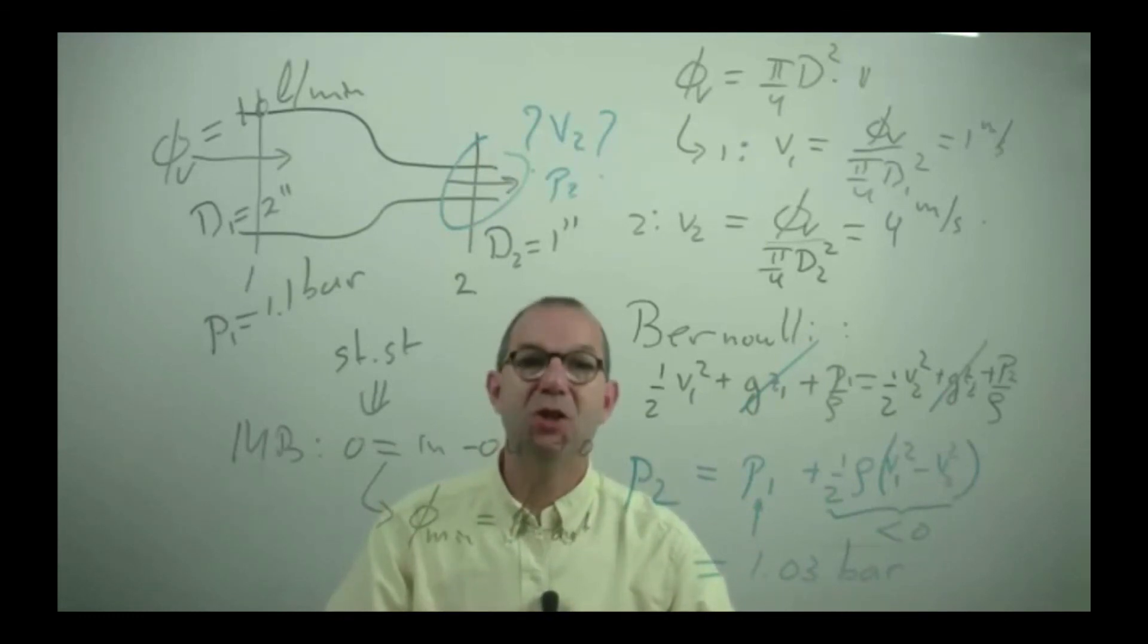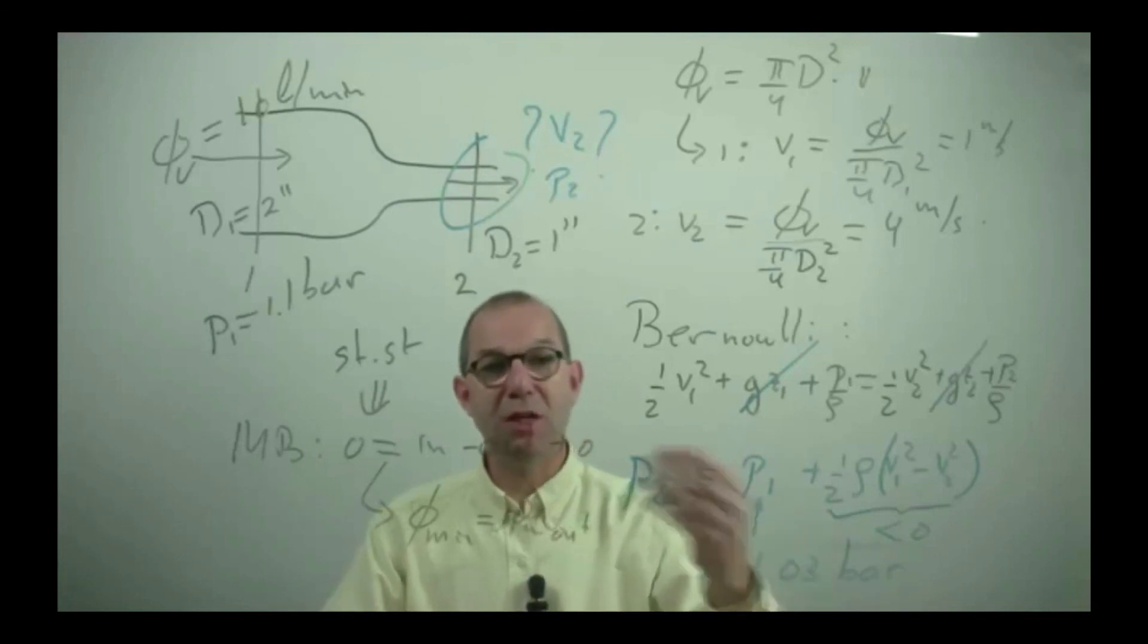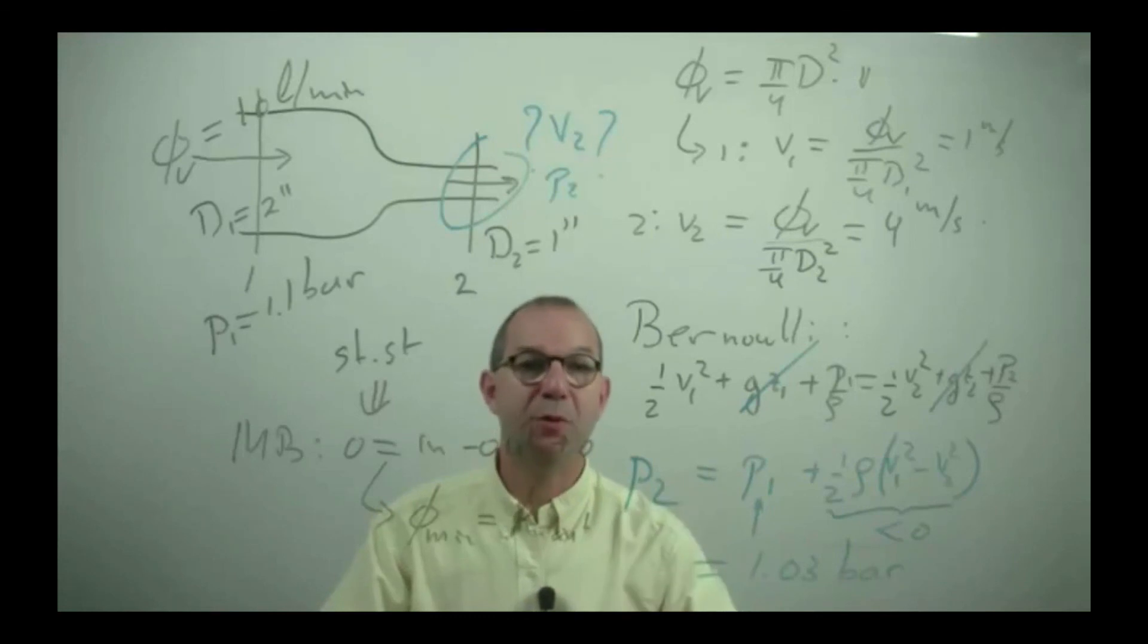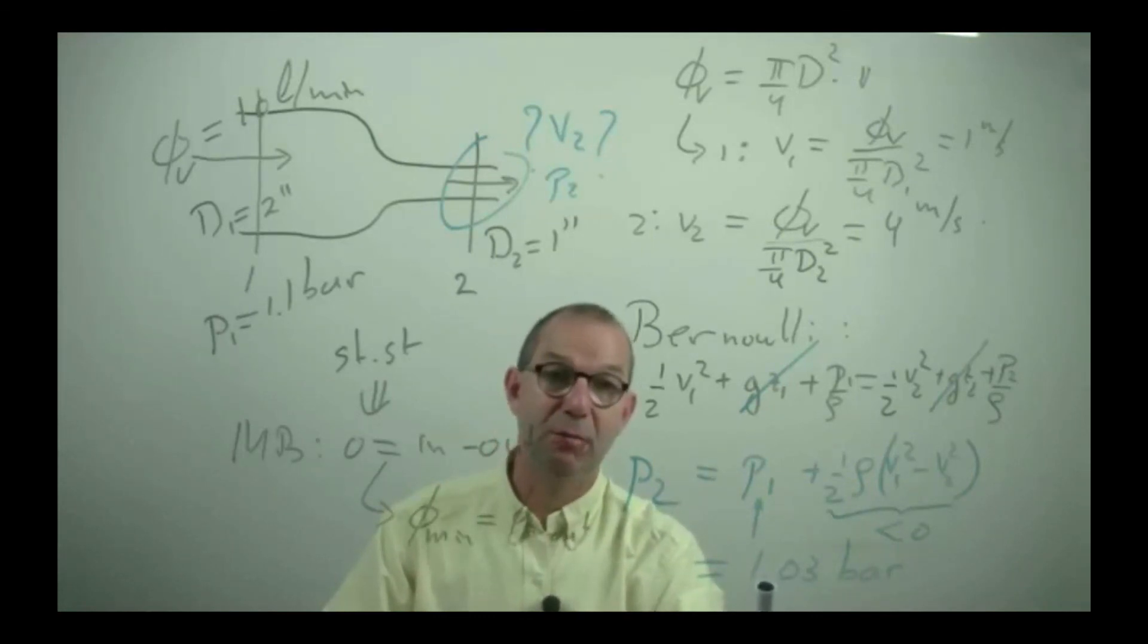Nothing is adding energy to the system, so the water takes it from itself. It cannot take it from the height, all it can do is convert part of its pressure energy into kinetic energy. And thus it has less pressure energy left when it's flowing through the narrowing.